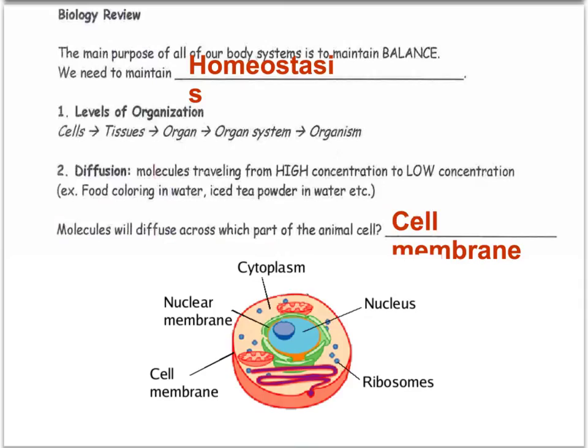Some of my words are getting cut off, but just flow with it. The main purpose of all of our body systems is to maintain balance — that's why we need to maintain homeostasis. This is a word you definitely need to know. Levels of organization is just the order that it goes in. Diffusion is a very popular process that is put on every final — you'll see it up until and through college.